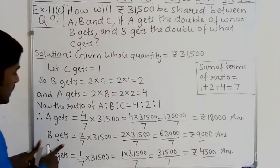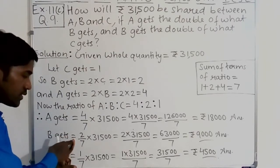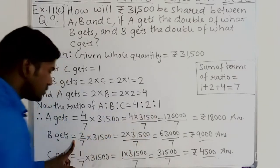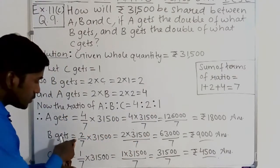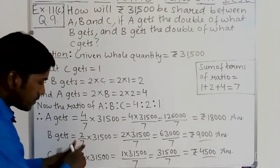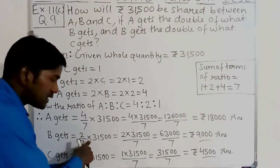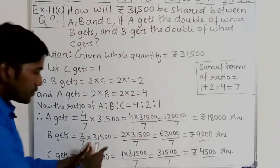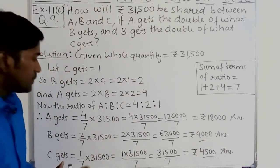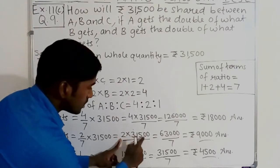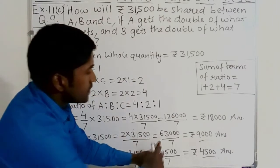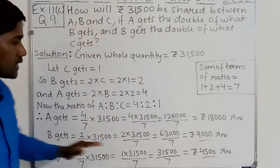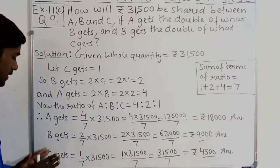Now how much B gets? B gets equal to the second part. So B gets equal to the second term of the ratio, which is 2, divided by the sum of terms of the ratio, which is 7, then multiplied by the whole quantity 31,500. Evaluate it: 2 into 31,500 divided by 7 equals 63,000 divided by 7, equal to 9,000. So B gets rupees 9,000.